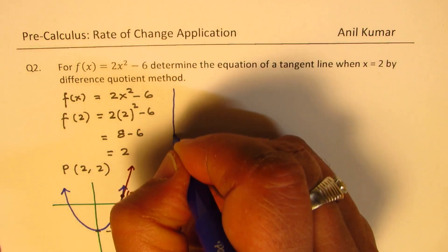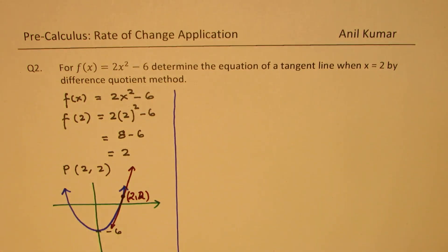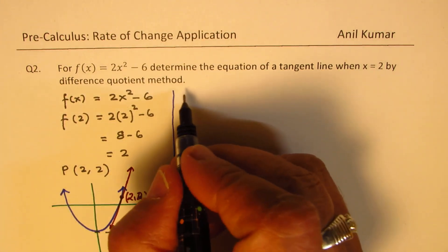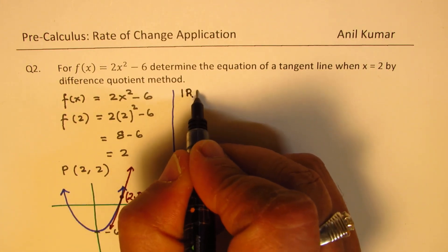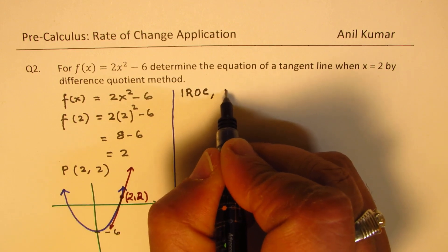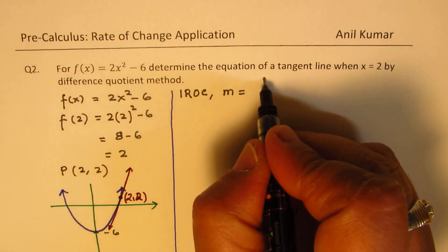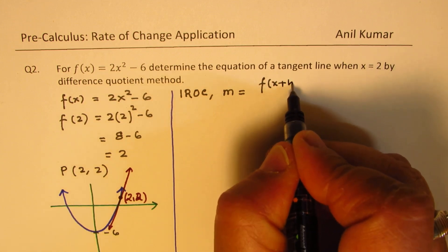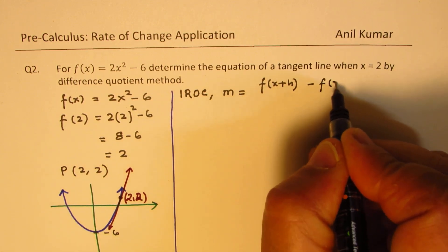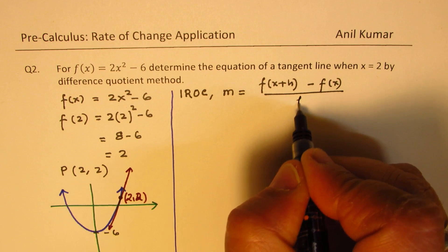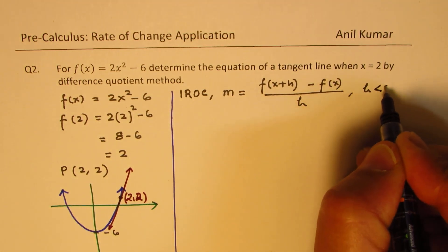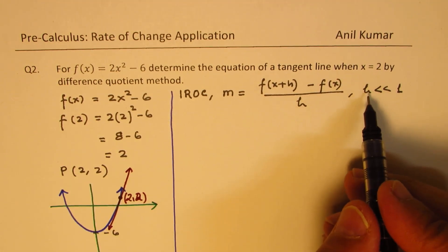Now, with difference quotient method, we can find the slope of the tangent line. We already know the point itself. So instantaneous rate of change, or we say slope m, will be at any point here, we can write this as f(x+h) - f(x) over h. Where h is very, very small as compared to 1. So it's negligible, or it's very close to 0.